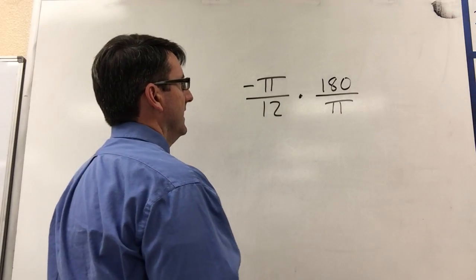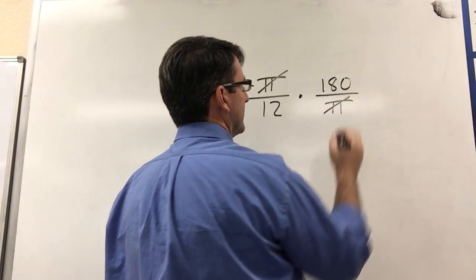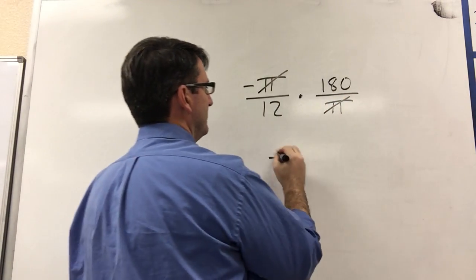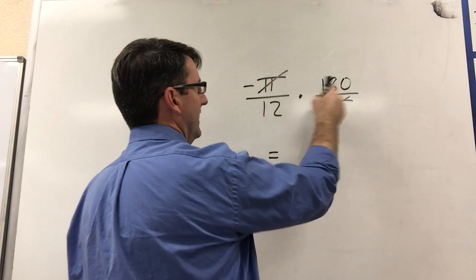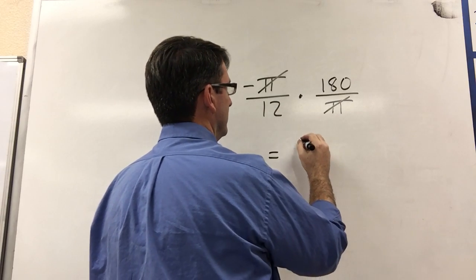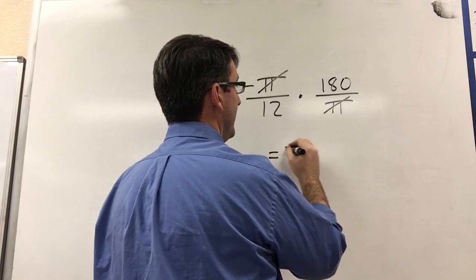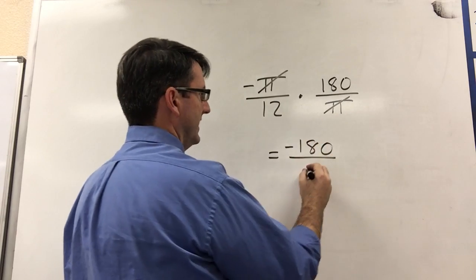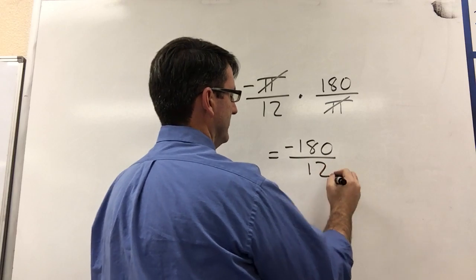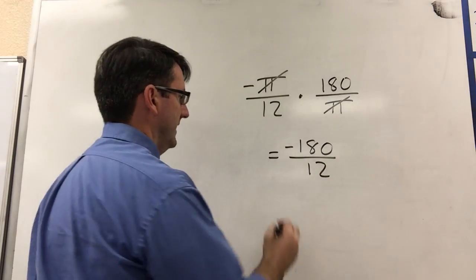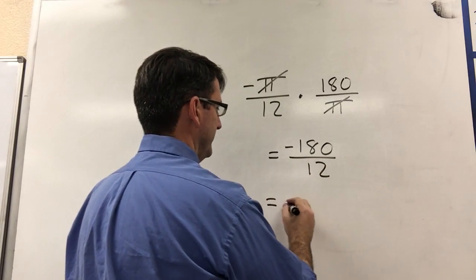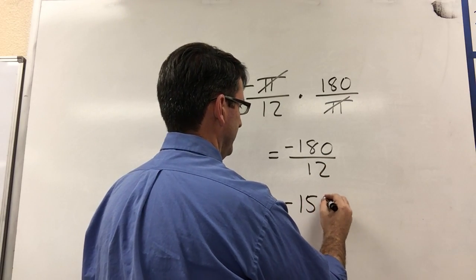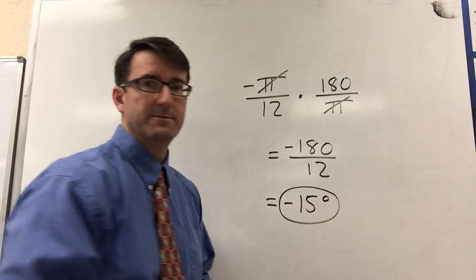Note that the pi's will cancel, and we're left with negative 180 divided by 12, and that's going to be negative 15 degrees.